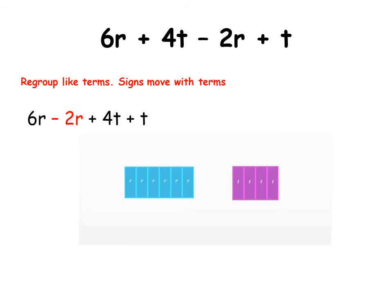Now, let's watch this demonstration as to how we would simplify. We have our 6R. And we have our 4T. And from the 6R, we're going to take away 2R from it. Remember? So we're going to take away 2R. And that leaves us with one, two, three, four R's.